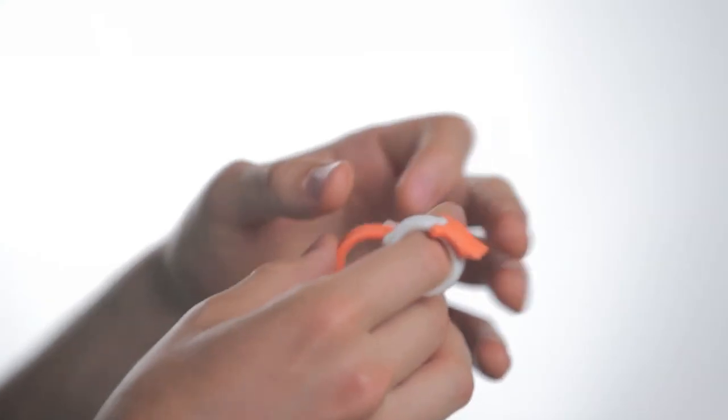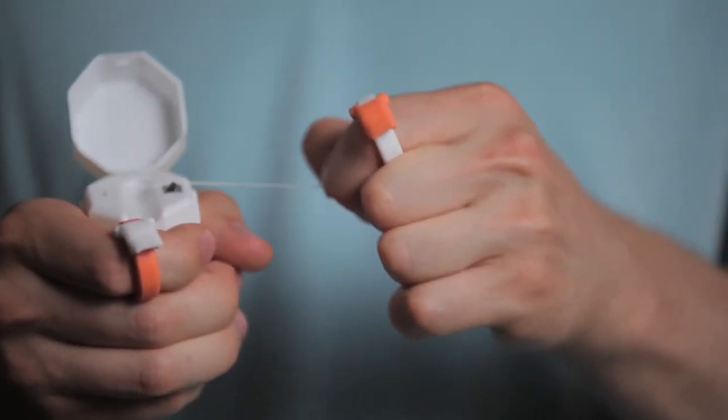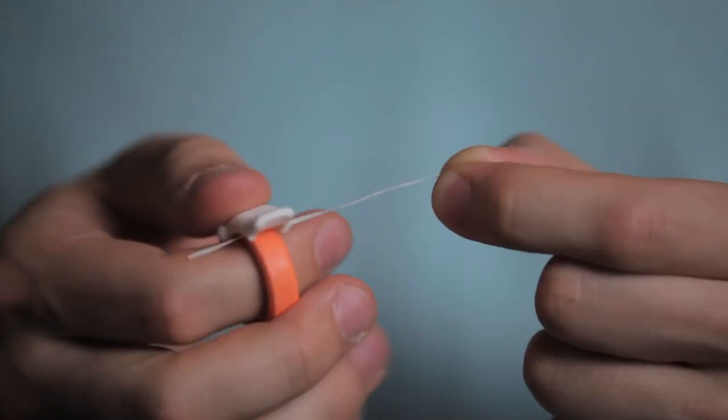First, put your Snappy flossers on. Next, cut off a segment of your favorite floss, then just clamp down. Now you're ready to start flossing with comfort.